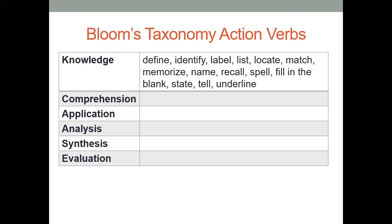Here are the action verbs associated with the knowledge level. If you are using the handout, you could either type directly into it or just pause this video and handwrite them. For knowledge, we have: define, identify, label, list, locate, match, memorize, name, recall, spell, fill in the blank, state, tell, underline. Because remember, at the knowledge level, this is just basic regurgitation of facts and information — identifying it as something that you have seen before.